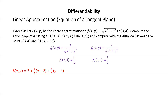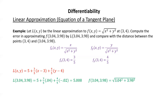L(3.04, 3.98) is 5 plus 3/5 times 0.04 plus 4/5 times negative 0.02, which comes out to 5.008. f(3.04, 3.98) — the square root of 3.04² plus 3.98² — is approximately 5.00819. The error in the approximation is approximately the difference, which comes out to 0.00019.